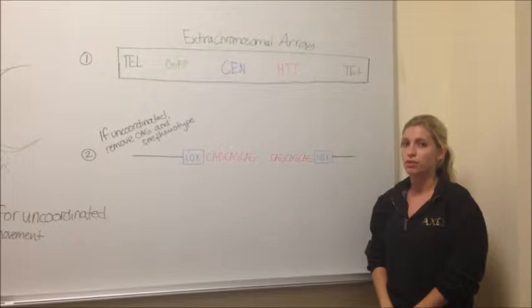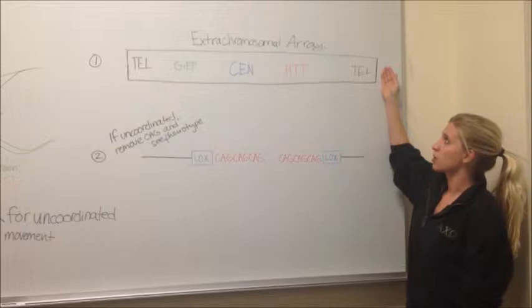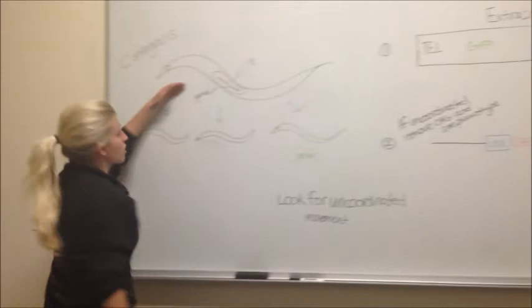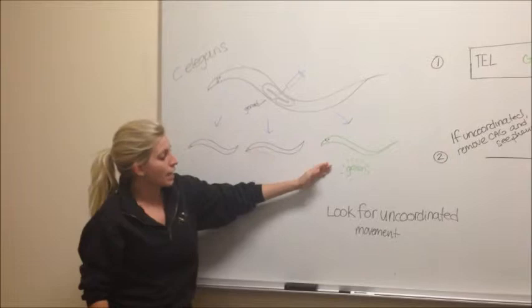We would start by engineering an extra-chromosomal array with HTT and GFP as a marker. We would then inject this into the gonad of an adult worm. We would look for green progeny of this adult worm, and in that progeny, we would look for uncoordinated movement.